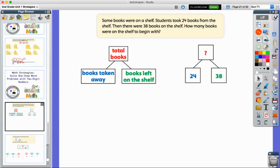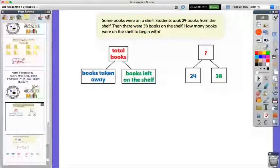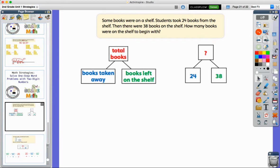In this example from Ready Math, there's a word problem that we're going to look at. Again, it is one step, so we're focusing on one operation, either addition or subtraction. Let's read through the problem. Some books were on a shelf. Students took 24 books from the shelf. Then there were 38 books on the shelf. How many books were on the shelf to begin with?